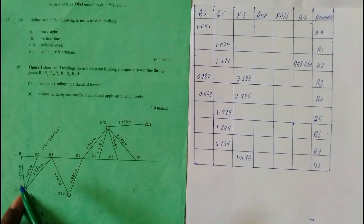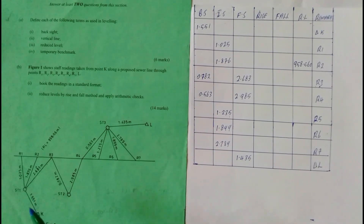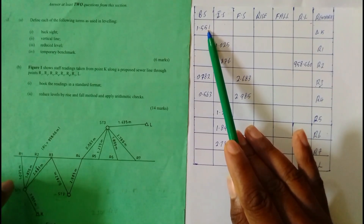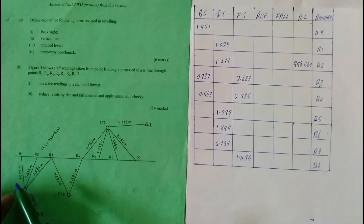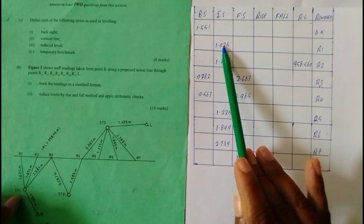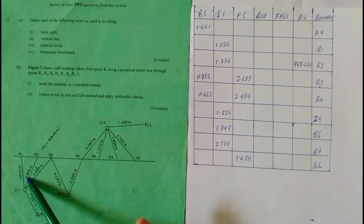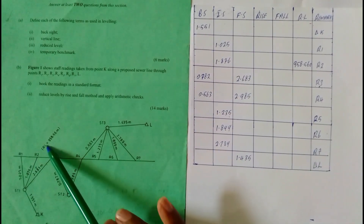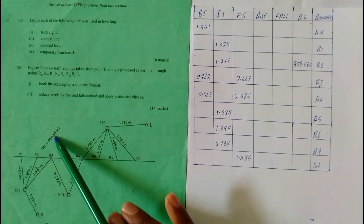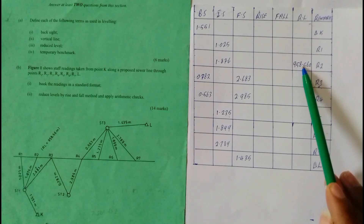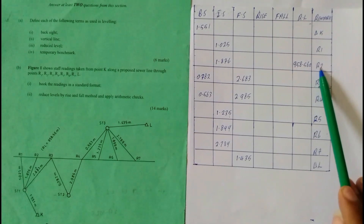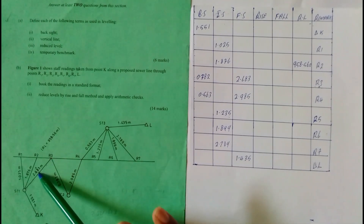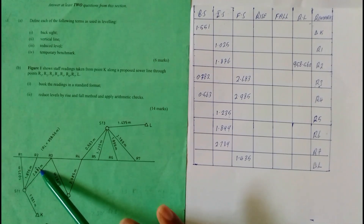At station 1, we have a backsite of 1.551. Then we have an intermediate site of 1.025, and another intermediate site of 1.876. At intermediate site reading R2, we have a reduced level of 958.56. Then we have 2.683 as our foresight.